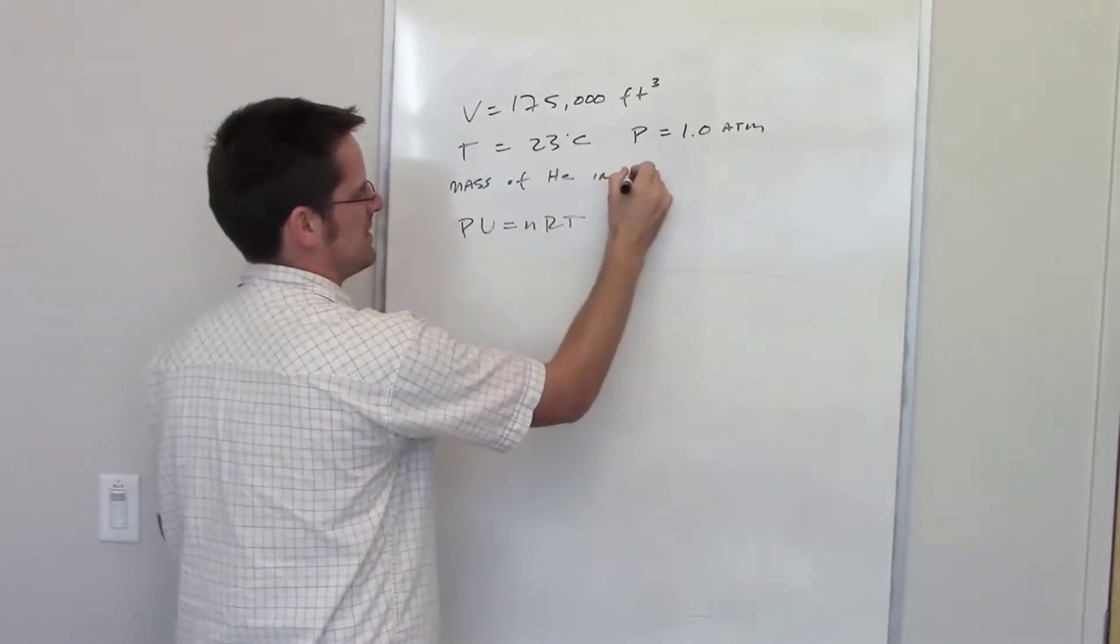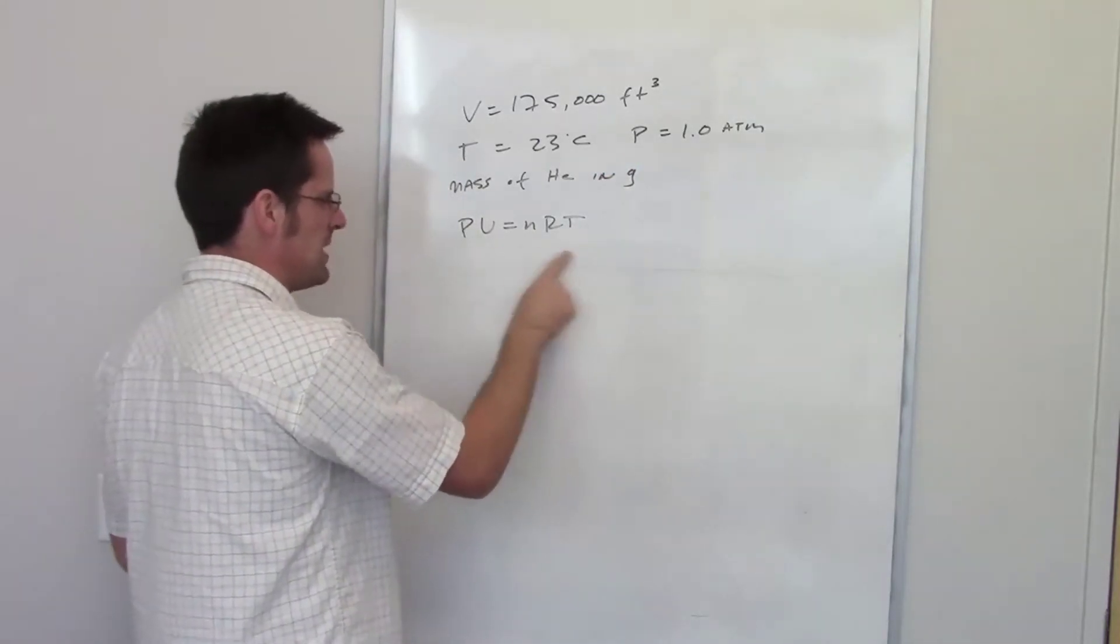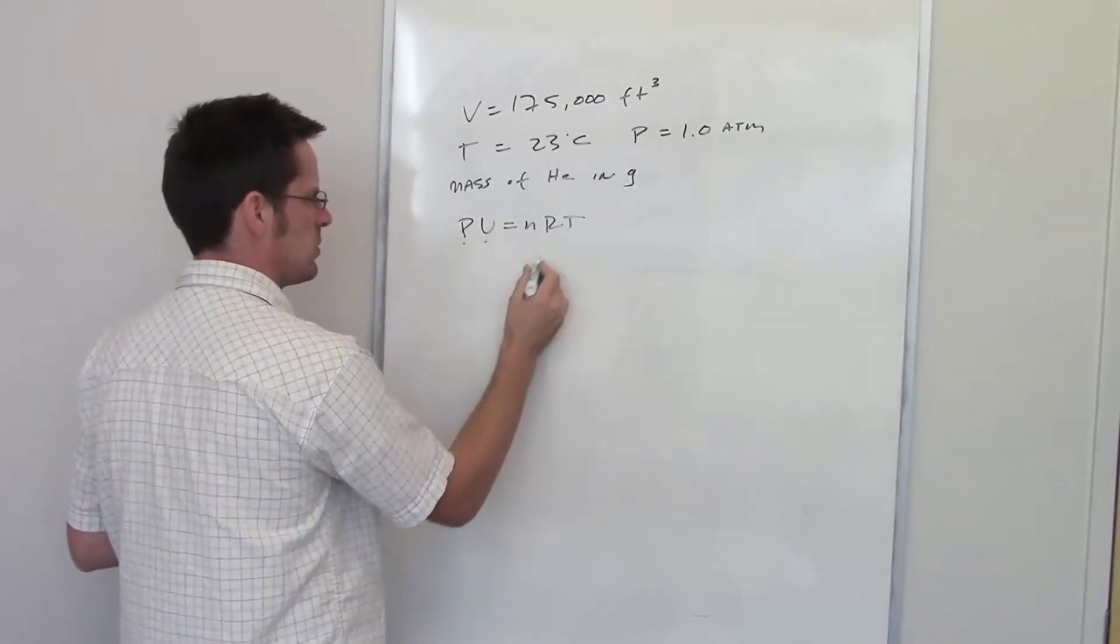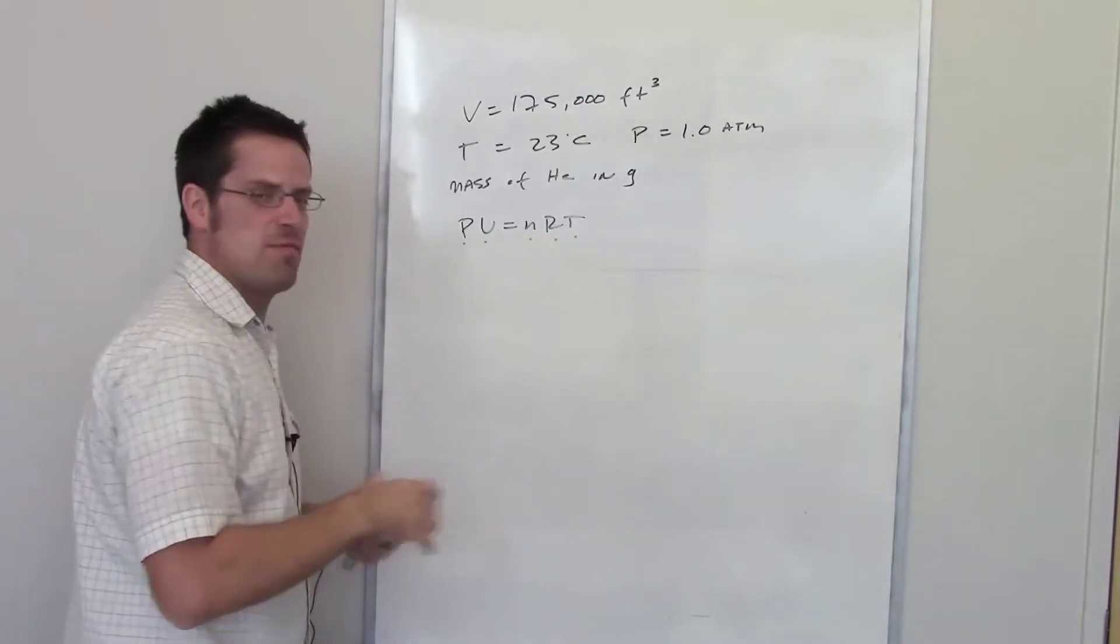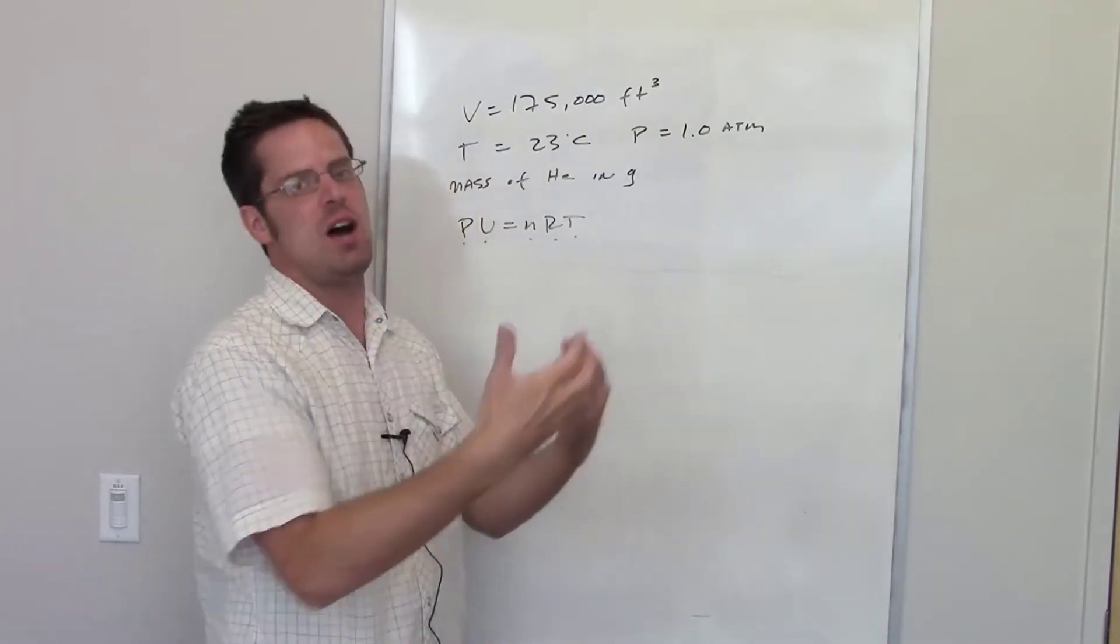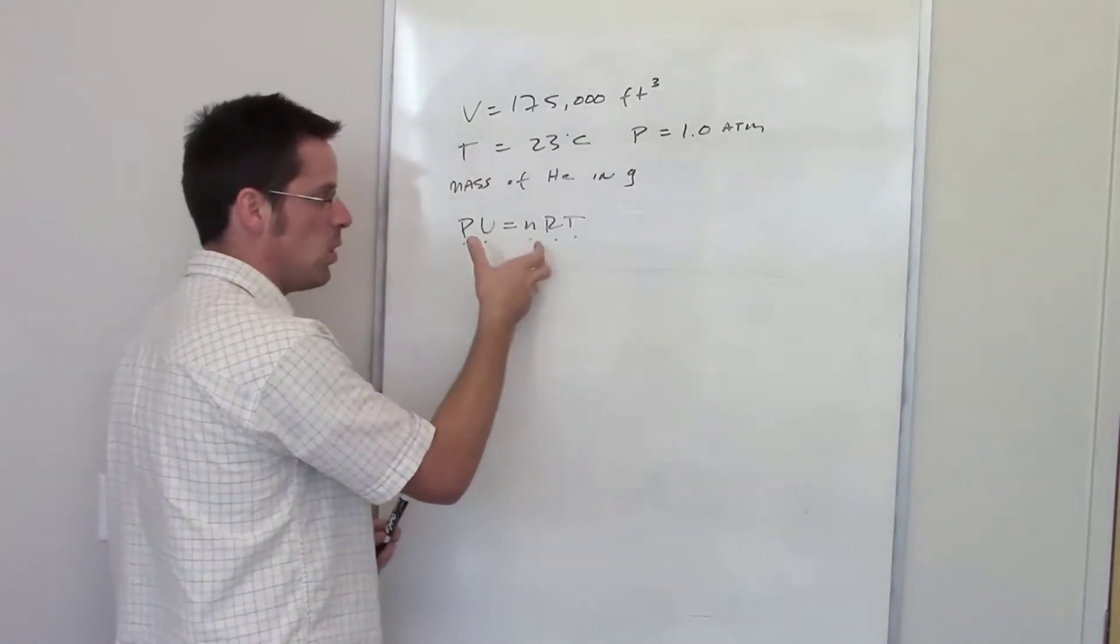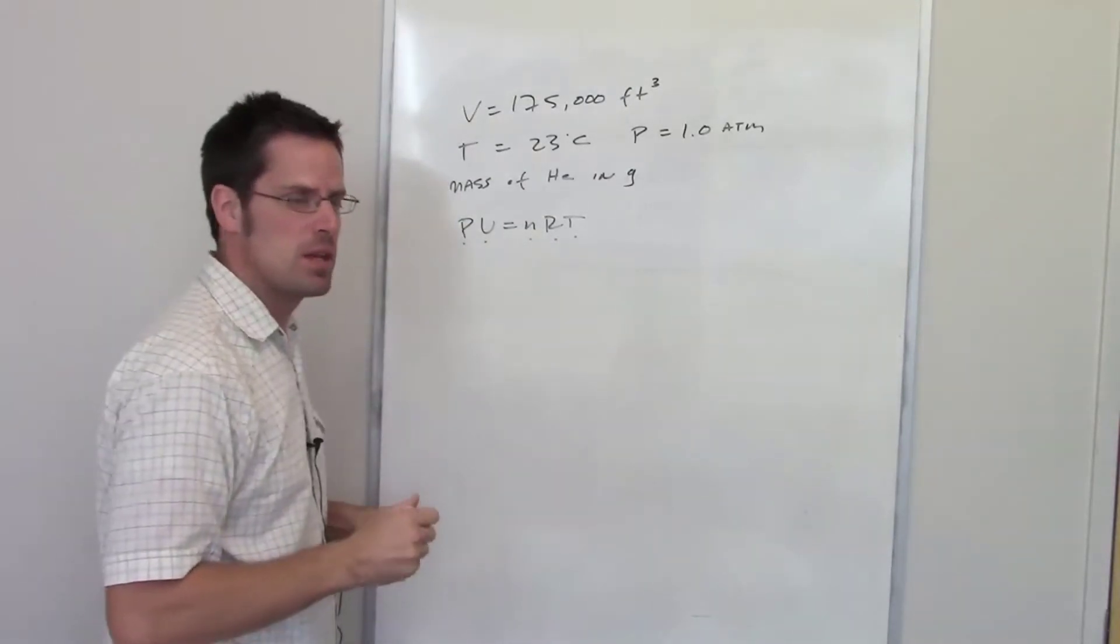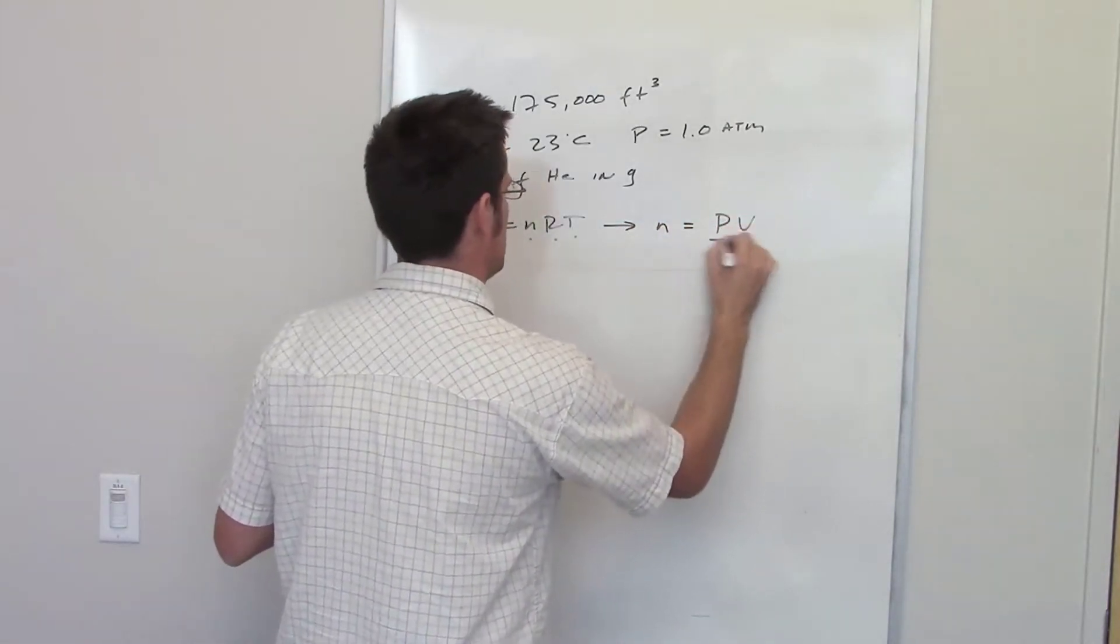Mass of helium is of course going to be in some kind of units like grams or kilograms. Do I have mass as one of these values here? This one's pressure. This one's volume. This one is the ideal gas constant. This one is temperature. This one is the number of moles. So I don't have mass embedded within the pervert equation at all. Is there anything in it that could allow me to determine what the mass is? Well, yeah. If I could determine what the number of moles are, then I could convert that into mass using the atomic mass of helium. So here's what we're going to do. We're going to rearrange this equation so that we have number of moles on one side and everything else on the other.